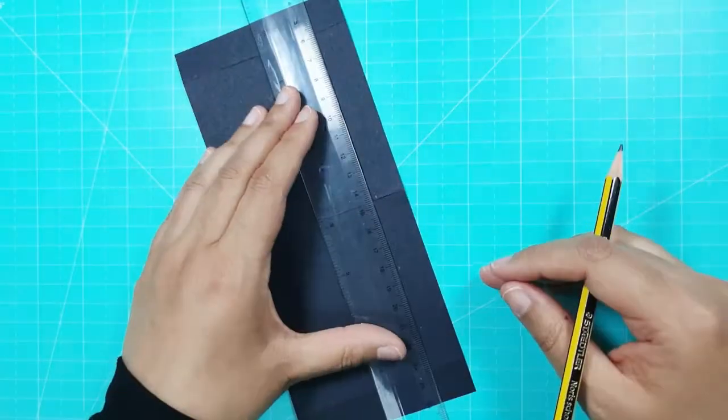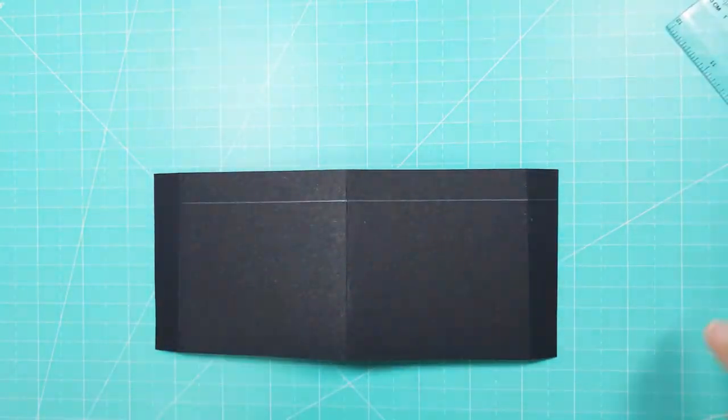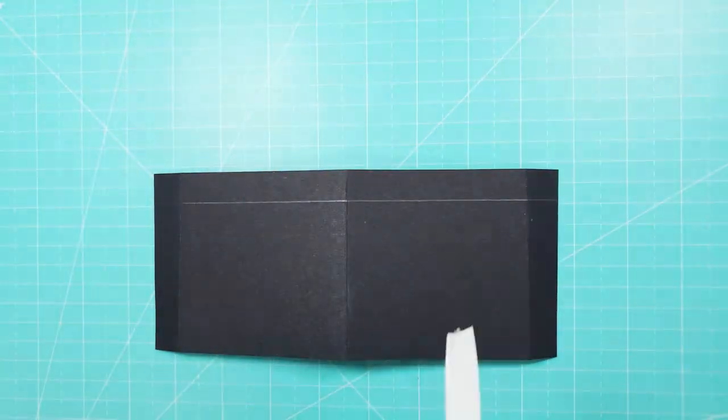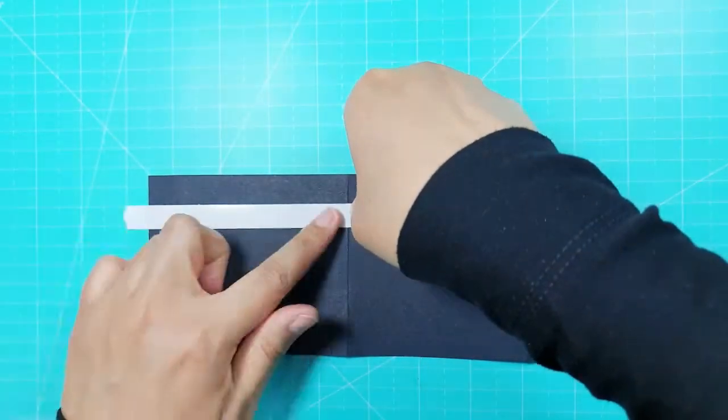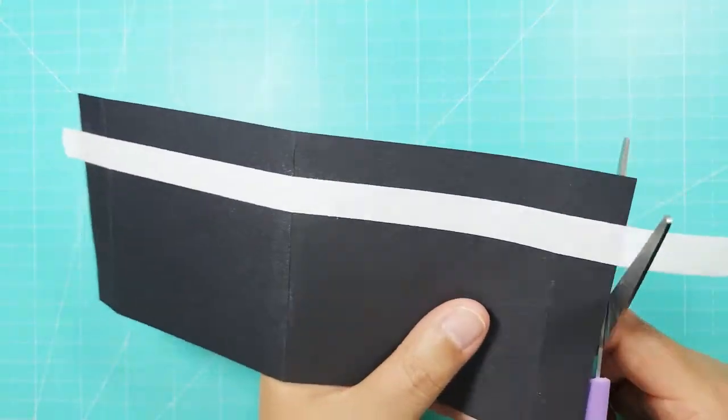I measured 1.5 centimeters down from the top of each piece of card and drew a line across the card. I then used this as a guide to stick down some narrow double-sided tape. I pressed the tape down firmly and cut off the edges.